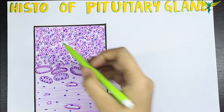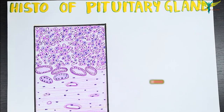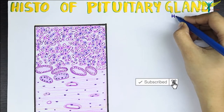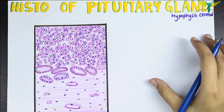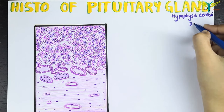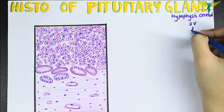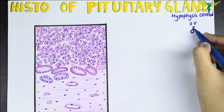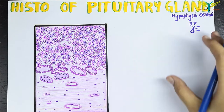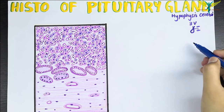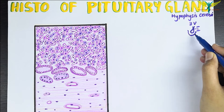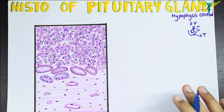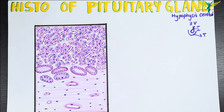In this video, let's learn about the histology of the pituitary gland. The pituitary gland is also called as hypophysis cerebri. It is suspended from the floor of the third ventricle by a stalk that is narrow and funnel-shaped, called as the infundibulum, and it lies in a depression on the upper surface of the sphenoid bone called as the sella turcica.